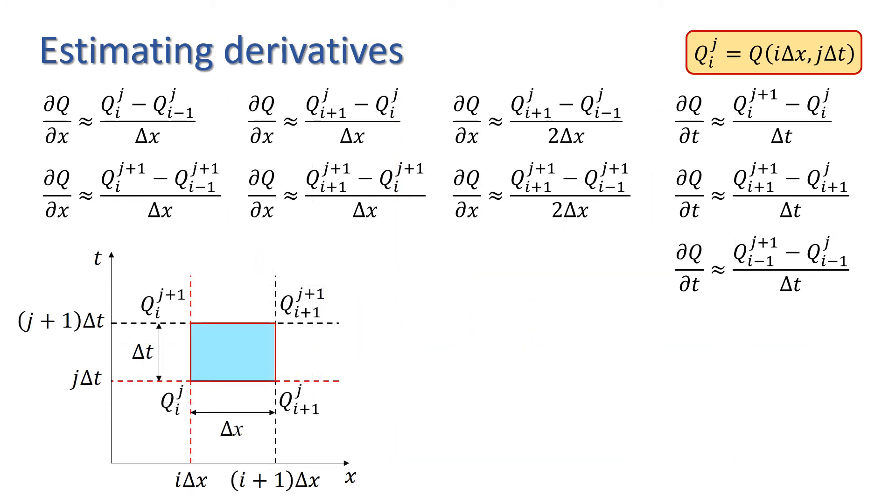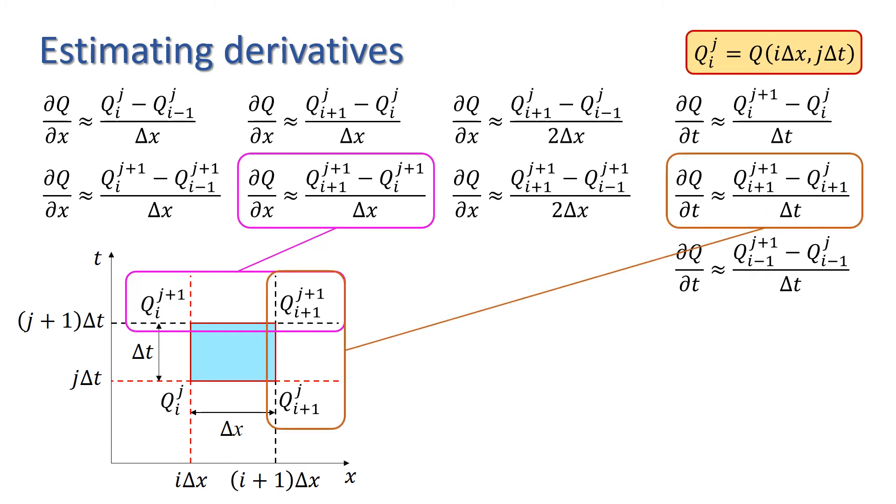In this case, I'm going to choose a forward spatial difference approximation evaluated at time step j plus 1, and a forward time difference approximation evaluated at node i plus 1.